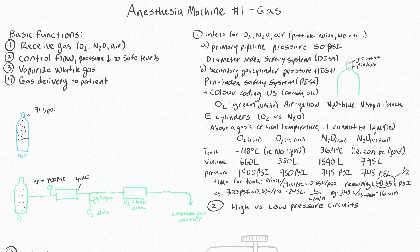The O2 flush valve is different from these pressure-regulating valves. This is essentially the simplest path for oxygen to take to the patient, but it's not very elegant because we're just blasting the patient with 50 psi when the O2 flush valve is open. This brings us to controlling flows and decreasing pressure to safe levels. Let's draw another path where oxygen runs through another pressure regulator, which drops the pressure slightly before entering the flow meter.